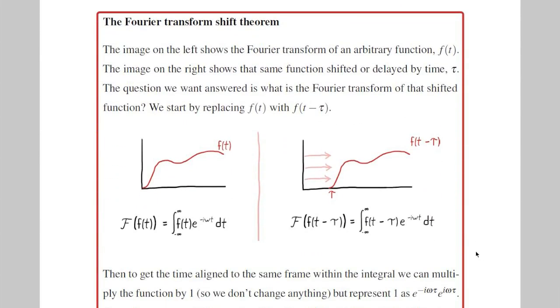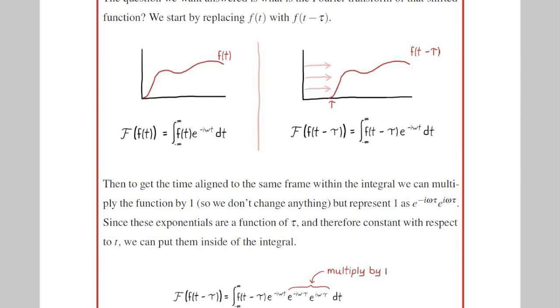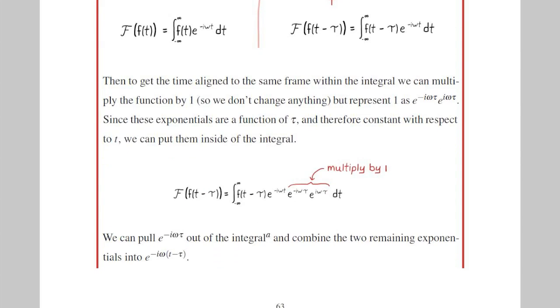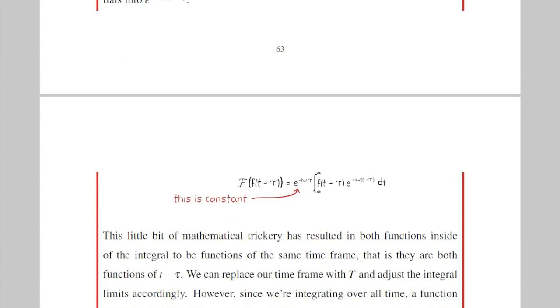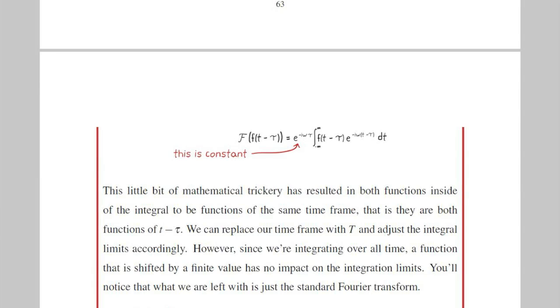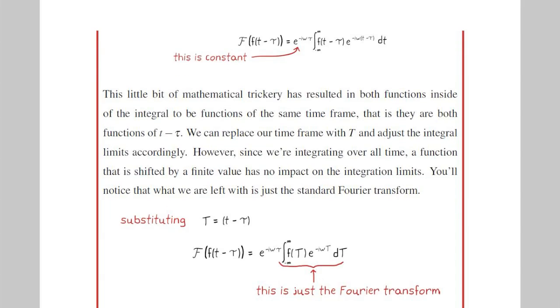The shift theorem is pretty awesome. If you take the Fourier transform of f of t, but first you shift f of t by a constant amount of time tau, you'll get an integral that already looks a lot like what we had in the brackets. But through some clever mathematical manipulation, we can simplify it. First, we multiply by e to the minus i omega tau and e to the i omega tau, which is just 1, so multiplying by 1 doesn't change anything. But we can combine two of those three exponentials to give us e to the negative i omega times t minus tau inside the integral and pull out of the integral the remaining e to the minus i omega tau. You'll see that we're left with is just the Fourier transform integral times a constant e to the minus i omega tau.